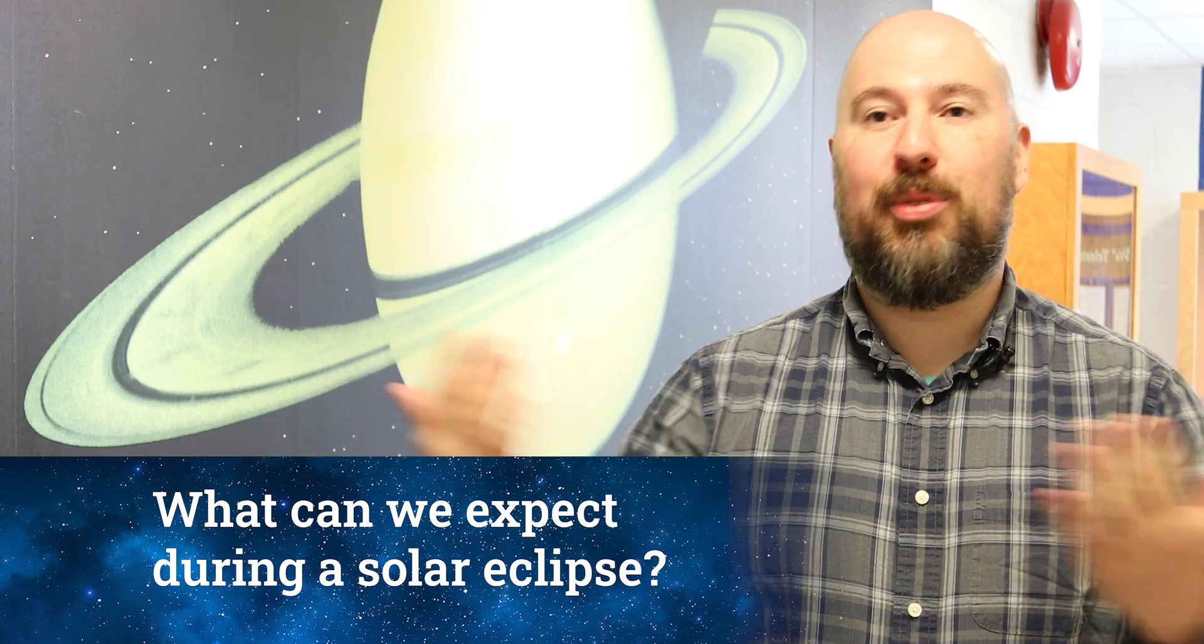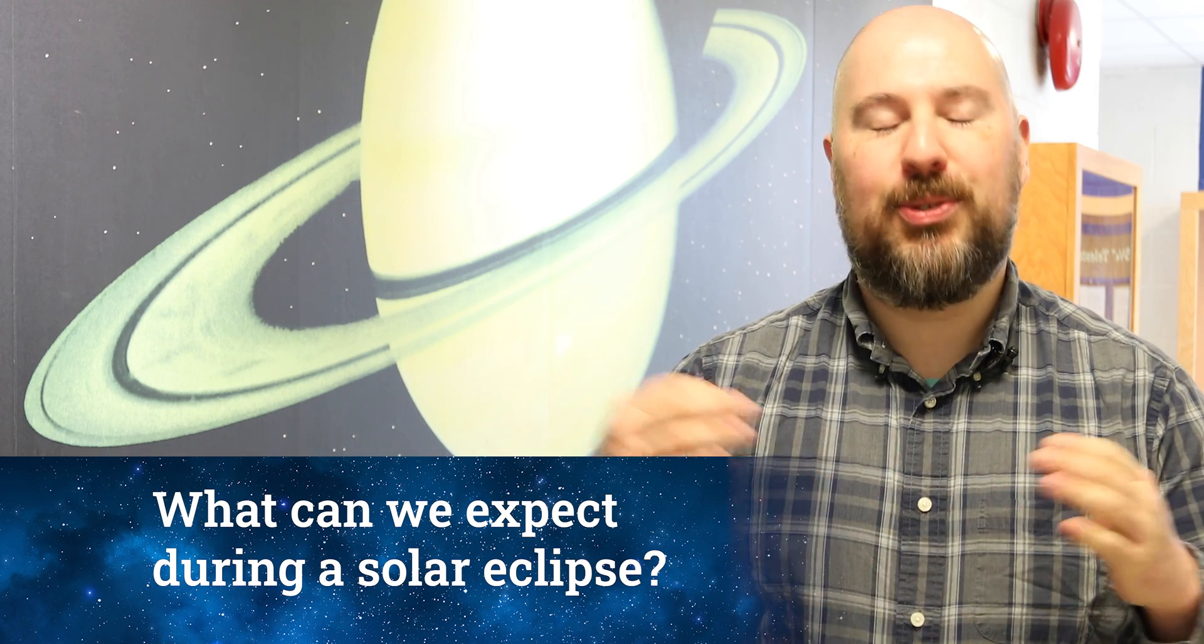During totality, the sun is blocked by the moon. You still get light - the sunlight does not fully disappear. Instead, it's going to look kind of like sunset or sunrise, like dusk everywhere around the horizon, not just in one location.